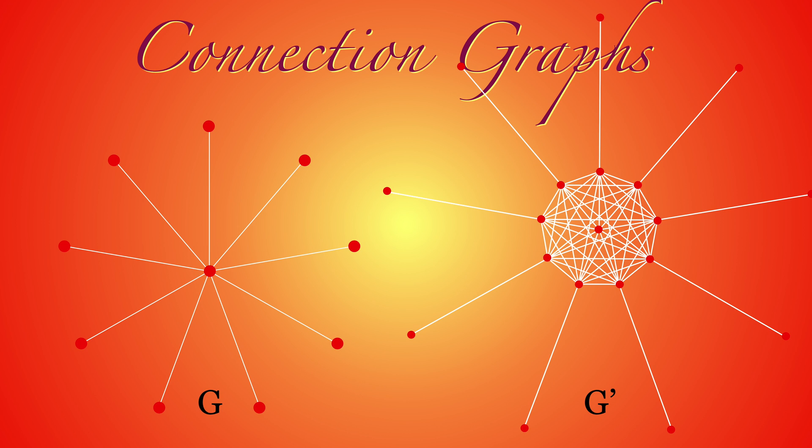We see here an example of a one-dimensional complex, the star graph. There are ten zero-dimensional simplices, the vertices, and nine one-dimensional cells, the edges in G. The one-dimensional faces are all connected to each other in the connection graph.